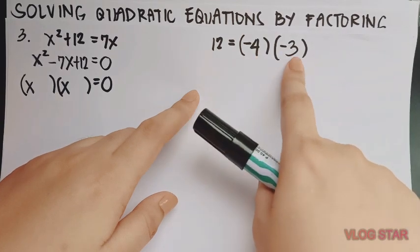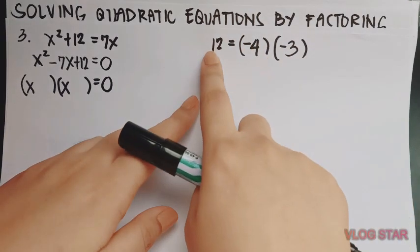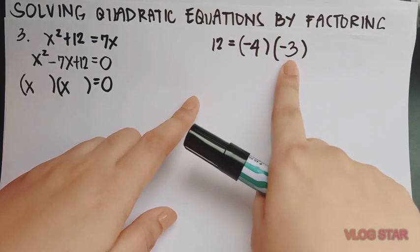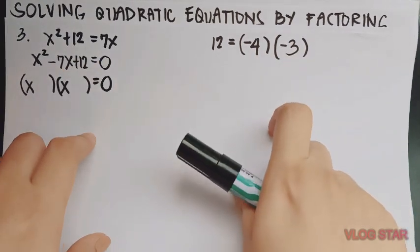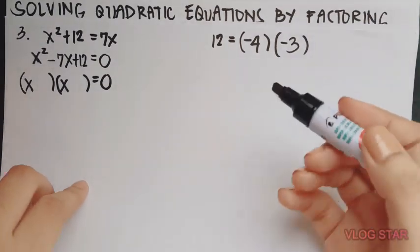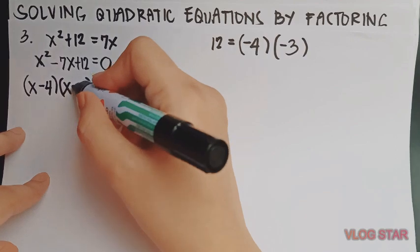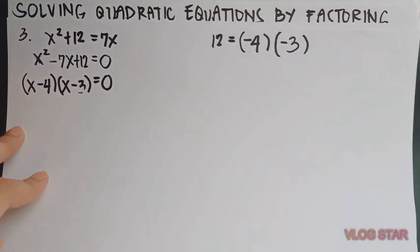Negative 4 times negative 3, it will give us positive 12. Negative 4 plus negative 3, this will give us negative 7. So the factors that we're looking for are negative 4 and negative 3.